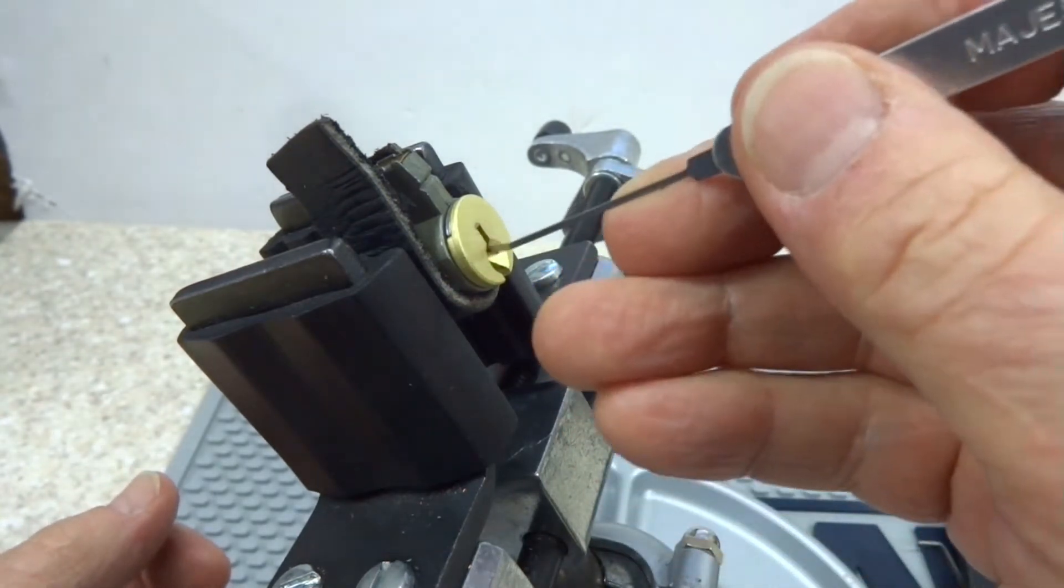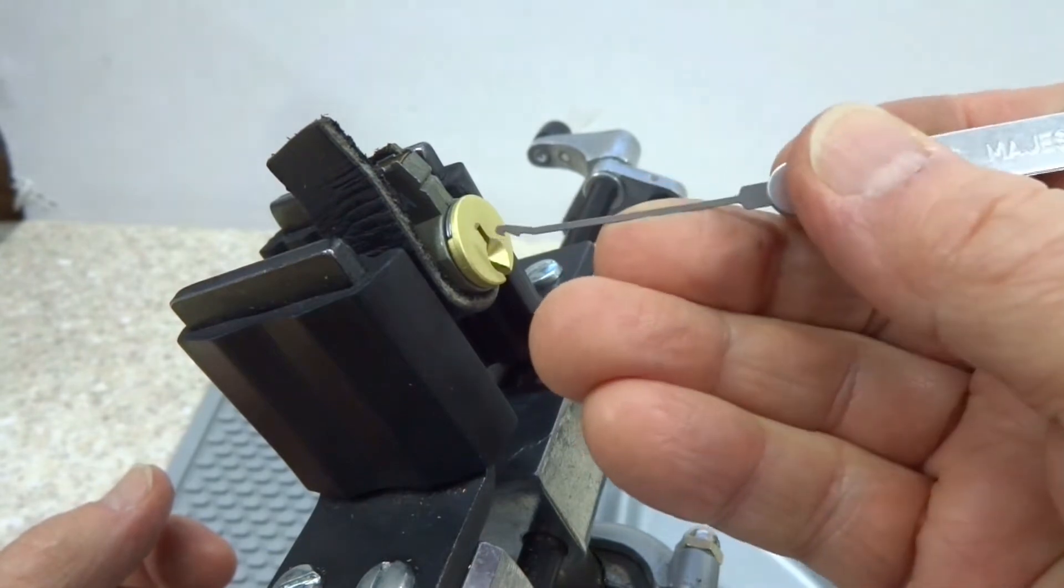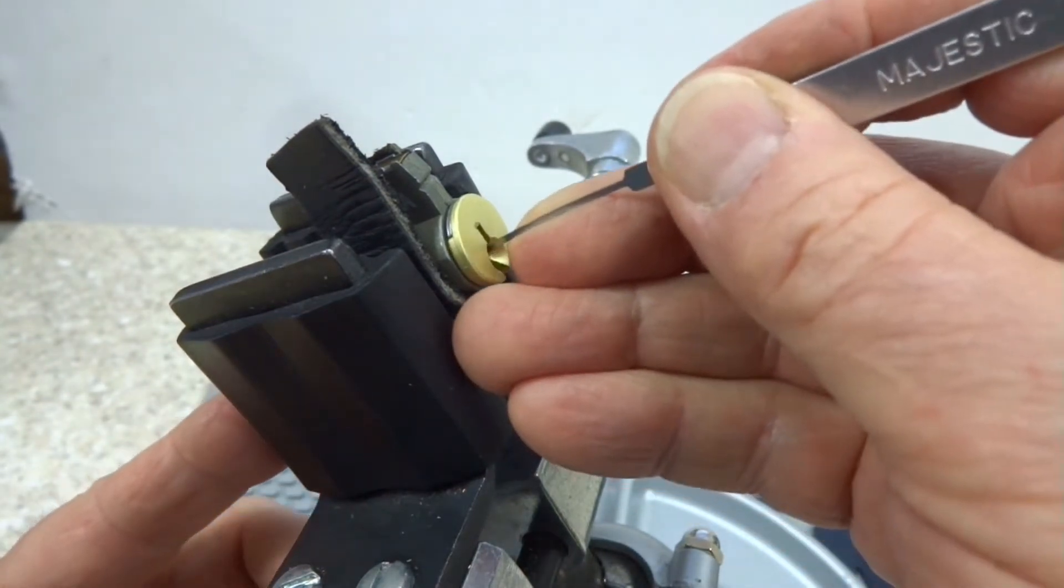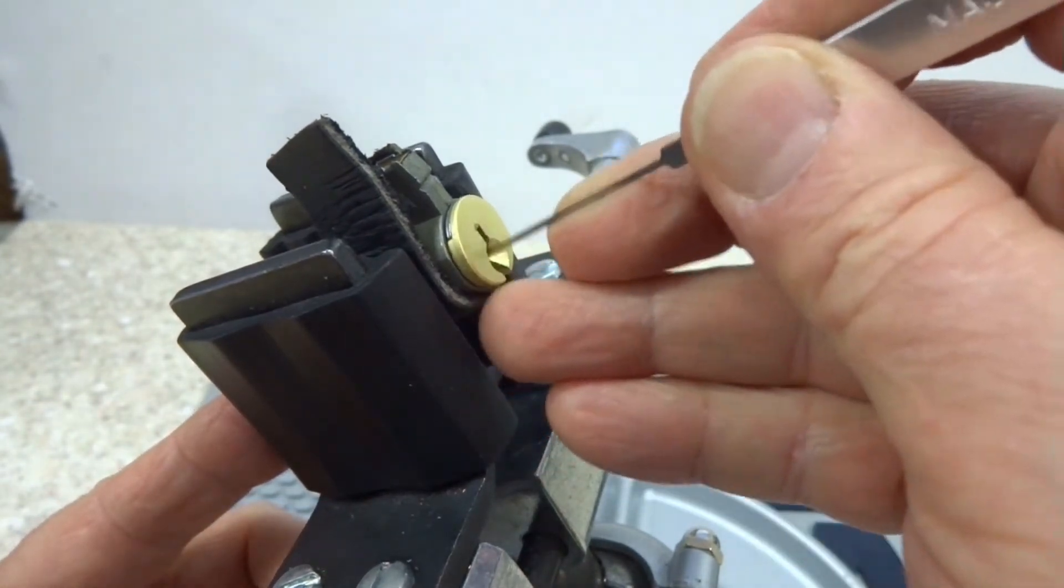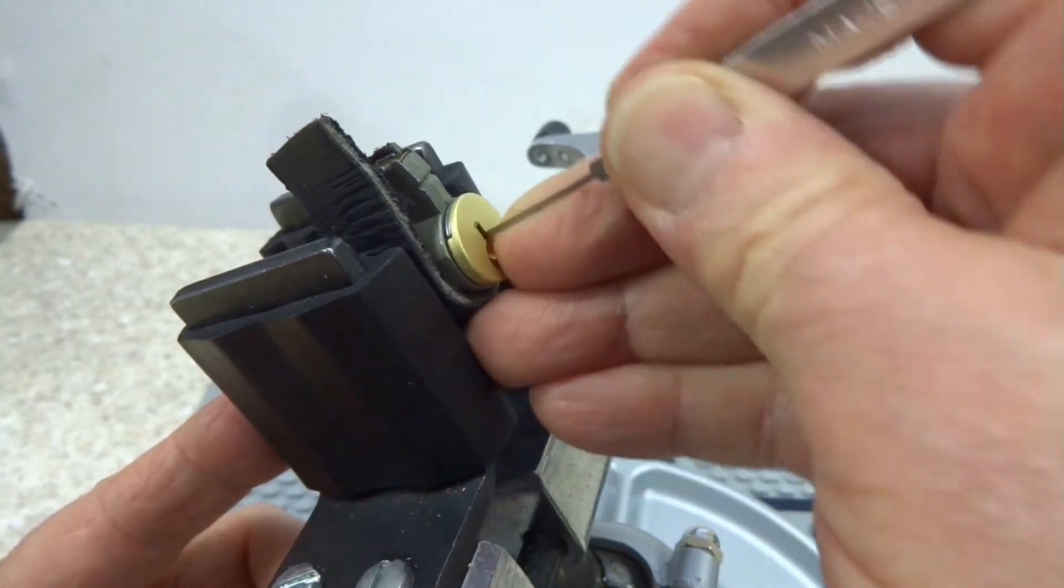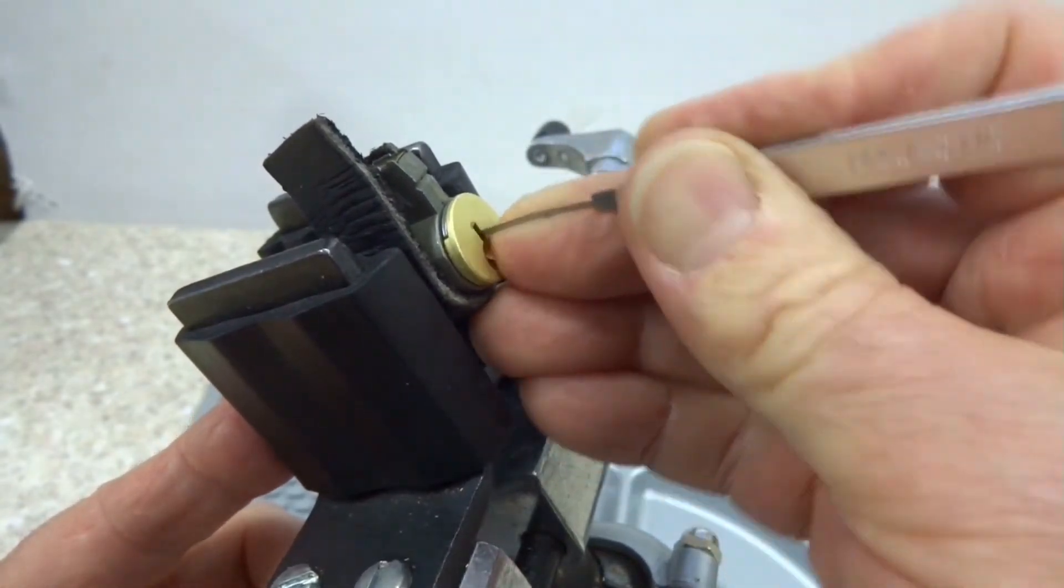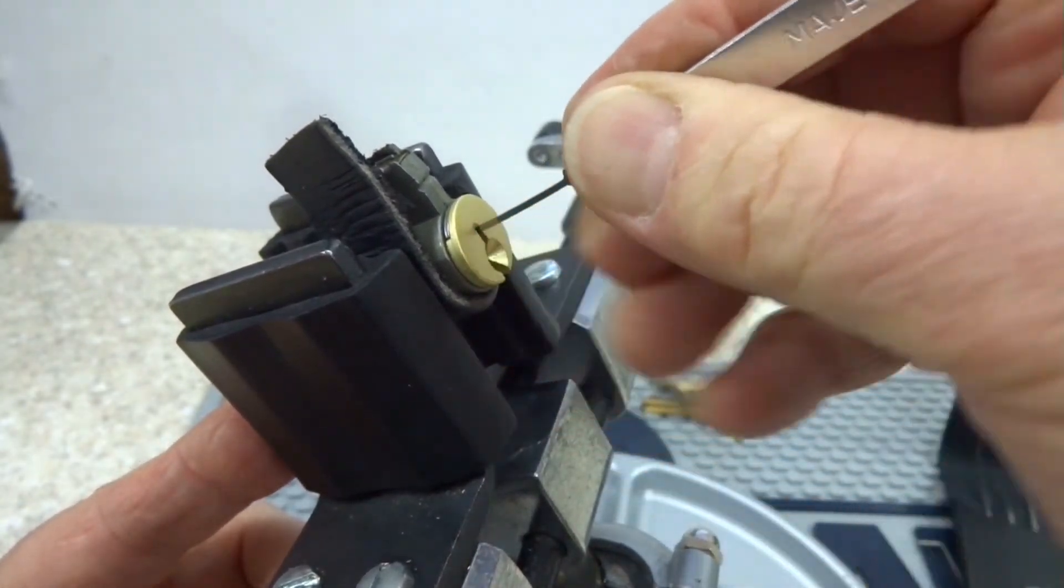But I found a lot of times it's easiest to go in from the top, and I'm going to take the tip of that extractor and I'm going to push all the pins up to the top of the keyway out of my way. I'm going to wedge it to the very back.